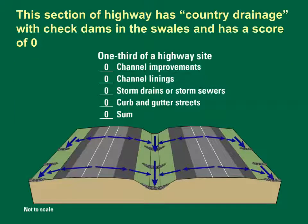This diagram shows a section of highway with country drainage where runoff flows off the pavement into grassy swales in the median and on the shoulders. These swales are not identified as having channel improvements; although designed as straight stormwater conveyances, the check dams act as flow obstructions. The other BDF factors are zero, so this section has a total score of zero. Three such sections would produce a BDF of zero.